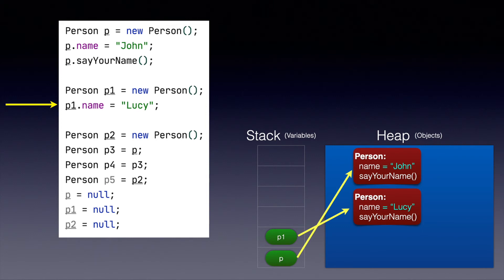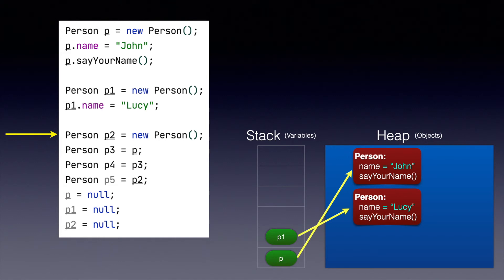We have a new person object created because we used the keyword new, and p1 is actually pointing to that new person whom we named as Lucy. In the next line, we created a third person, and this third person is being assigned to the variable p2. Once this line is executed, this is how the diagram behind the scene looks.